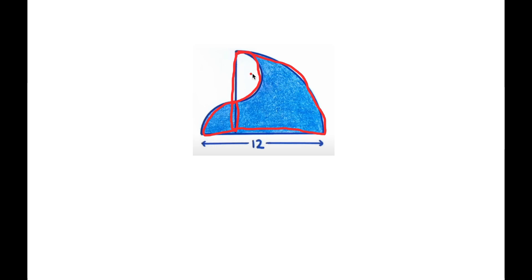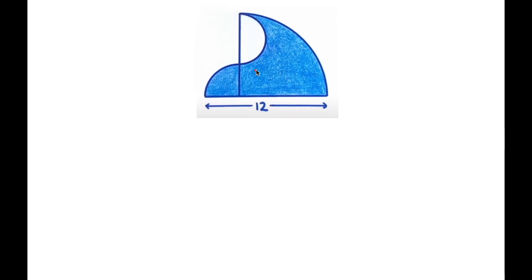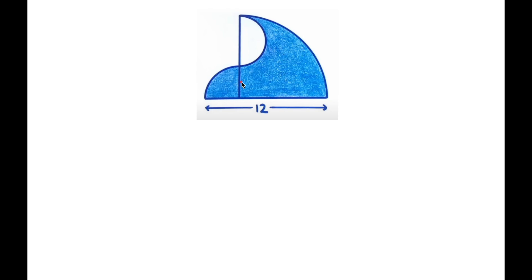This semicircle is not shaded in blue, so we don't want to find its area. We just want the area of the region shaded in blue. So let's first ignore this region here — I'm going to put it in red so we don't have to worry about it — and focus on this large quarter circle.